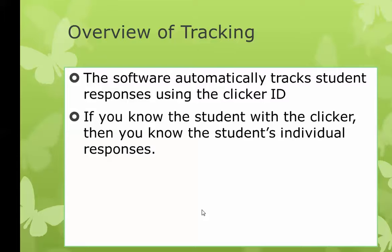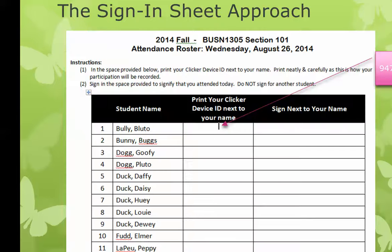When we talk about tracking, it's not something complicated to configure. The clicker system knows — when you push the button on a particular clicker, that clicker has answered. The software automatically tracks student responses using the clicker ID. The problem is: what student goes to what clicker ID? You can either use a sign-in sheet so they tell you what clicker they had that day, or you can type up a participation list so the system knows which student goes with which device ID.